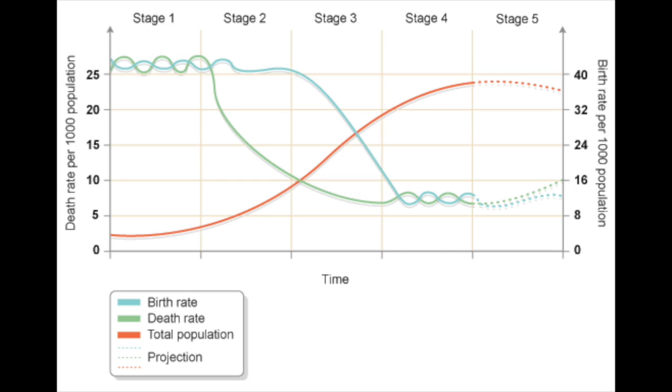Let's go ahead and take a look at the demographic transition model. As we can see in this graphic, it is set up to show where countries are in their development. In theory, all countries will pass through this model at some point. We're going to break down each stage to help make a little more sense out of it, so that it's not as confusing. Let's get started and take a look at stage one.